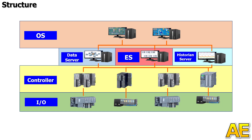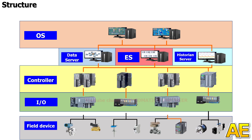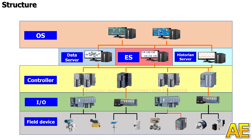The next level is the Input-Output module. This is the connection between the controller and the field device. At the bottom is the field device, such as the sensor, the valve, the contactor, the encoder, etc.